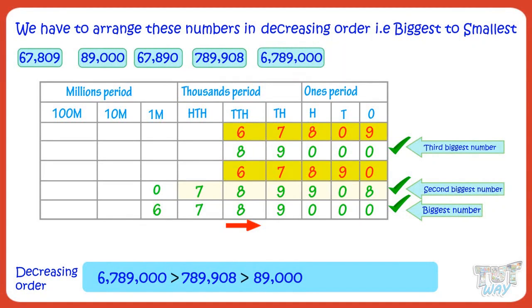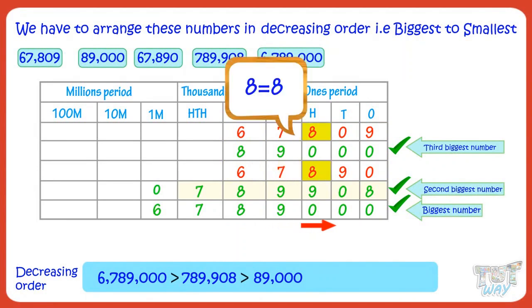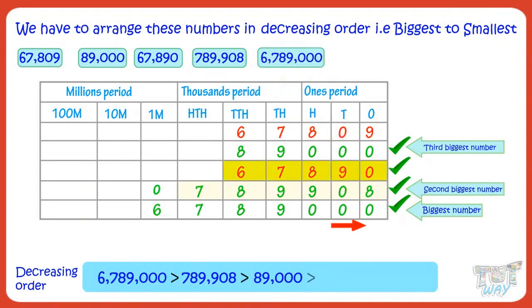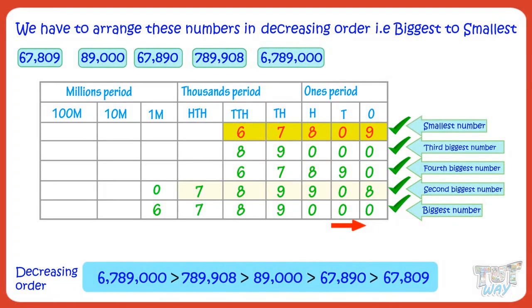Now we have two numbers left. In these two numbers, again we have to start at the left and look for the place where the digits are different to compare the numbers. Both numbers have the same digits at the 10,000 place and the same digits at the 100,000 place. The digits at the 10,000 place are different — this number has the bigger digit, so this number is the fourth biggest number. The only number left is the smallest number. So we have so easily arranged our numbers in decreasing order using the place value chart.